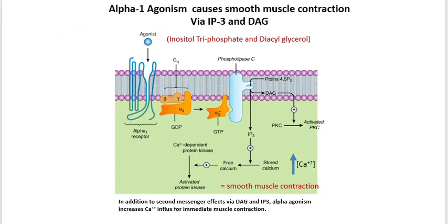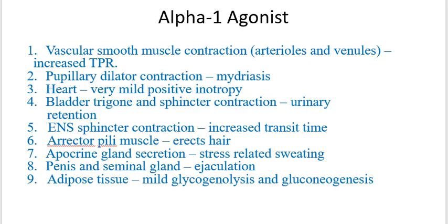That's how you get the pressor effect. Alpha-1 agonists do many things in different tissues, and the physiologic consequences of alpha-1 agonism are depicted here. As we go through all of these different blocks and physiologies, you'll learn about all of these different processes — I wanted to put this here as a guideposts.